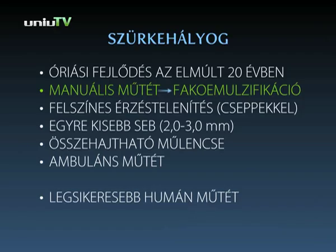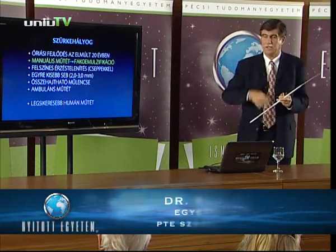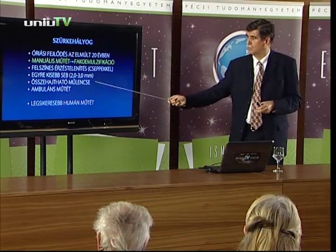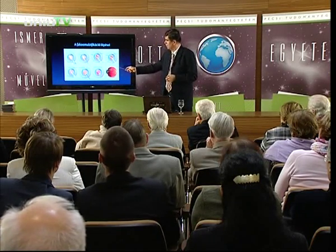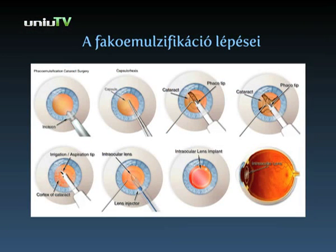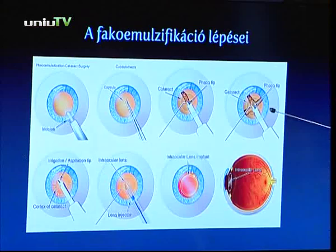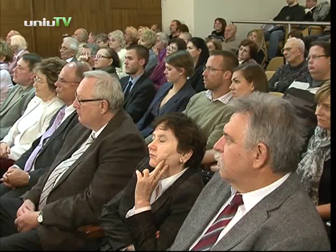A szürkehályog-műtét óriási fejlődésen ment át az elmúlt 20 évben. A manuális, kézzel végzett műtétet felváltotta a fakoemulzifikáció. Felszínes érzéstelenítésben végezzük a műtéteket, cseppekkel érzéstelenítjük a beteget. Az a célunk, hogy minél kisebb seben, 2-3 mm-es seben végezzük. Összehajtható műlencsét ültetünk be, ambulánsan végezzük a műtétet, és ez az egyik legsikeresebb humán műtét. Sebkészítés után az elülső tokon csipesszel egy nyílást készítünk. A kemény magot feldaraboljuk a fakoemulzifikációs készülékkel, ami nagyon finom rezgéseket végez. Hogyha feldaraboltuk, kiszívjuk a kemény magot, majd a puha kérget, és a műanyag lencsét összehajtott állapotban a kisebb seben keresztül beültetjük – az szétnyílik, és elfoglalja a végleges helyét.